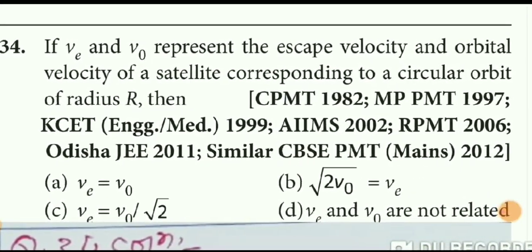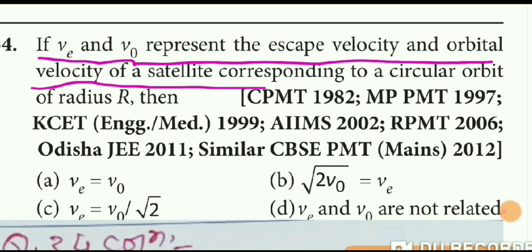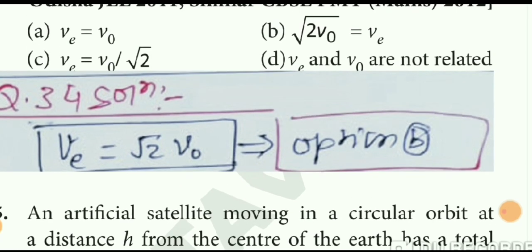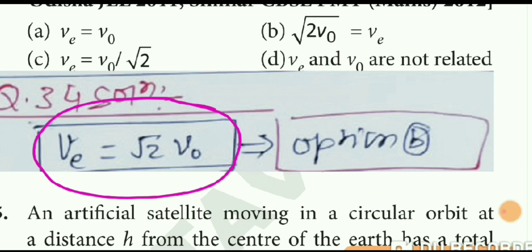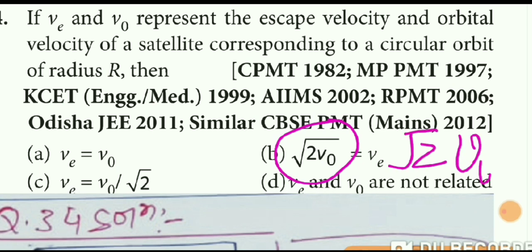Question number 34: if VE and V₀ represent escape velocity and orbital velocity for a satellite in an orbit of radius R, what is the relation? Writing both equations and dividing: VE = √2 × V₀. So option B is correct. Note: there is a misprinting in option B — √2 should be outside V₀, meaning VE = √2 · V₀.